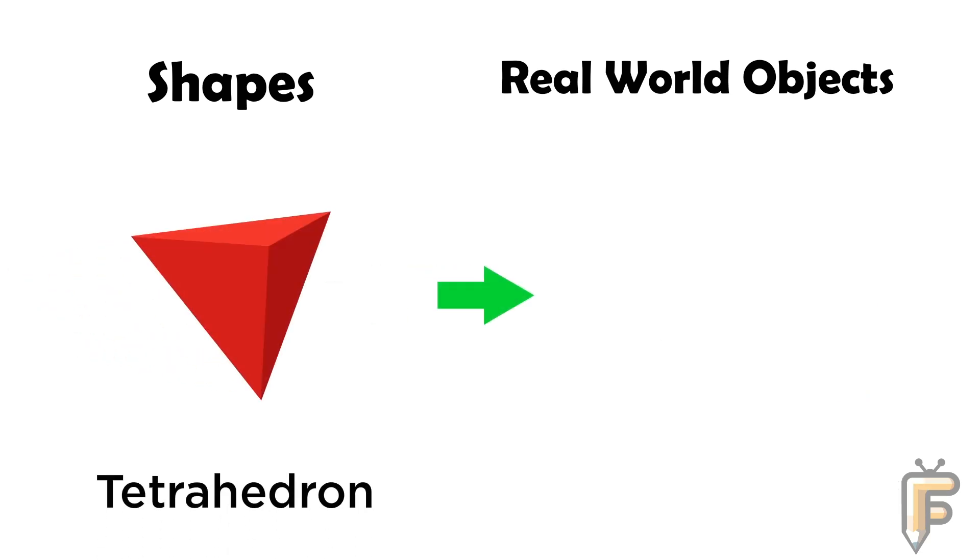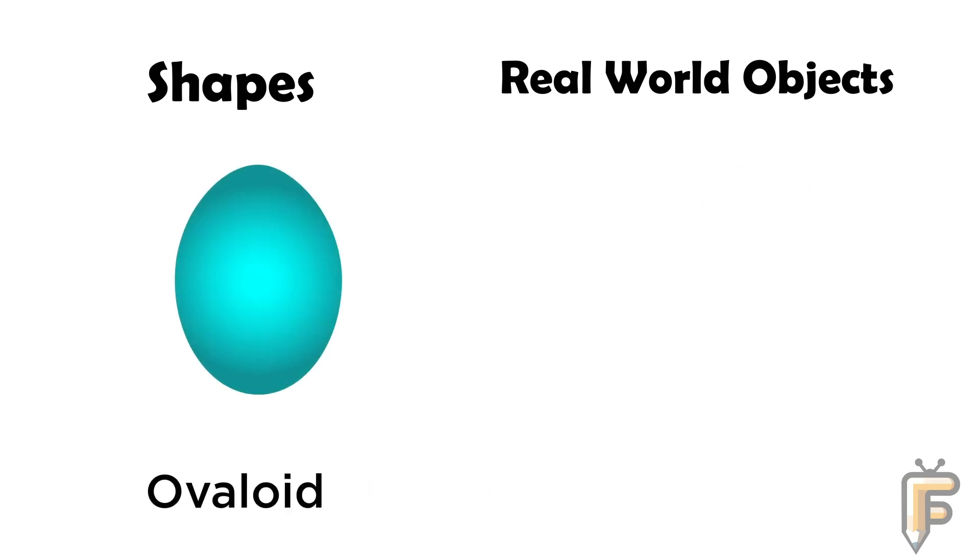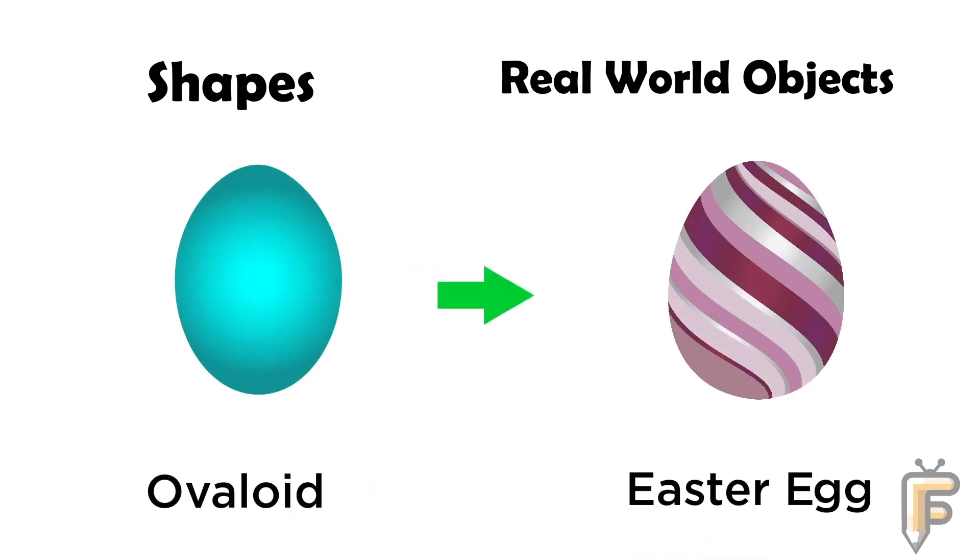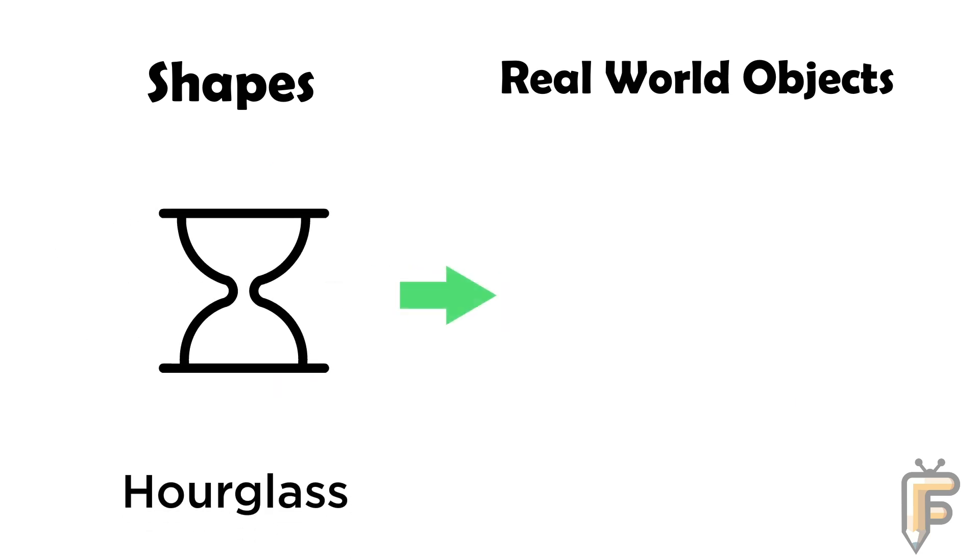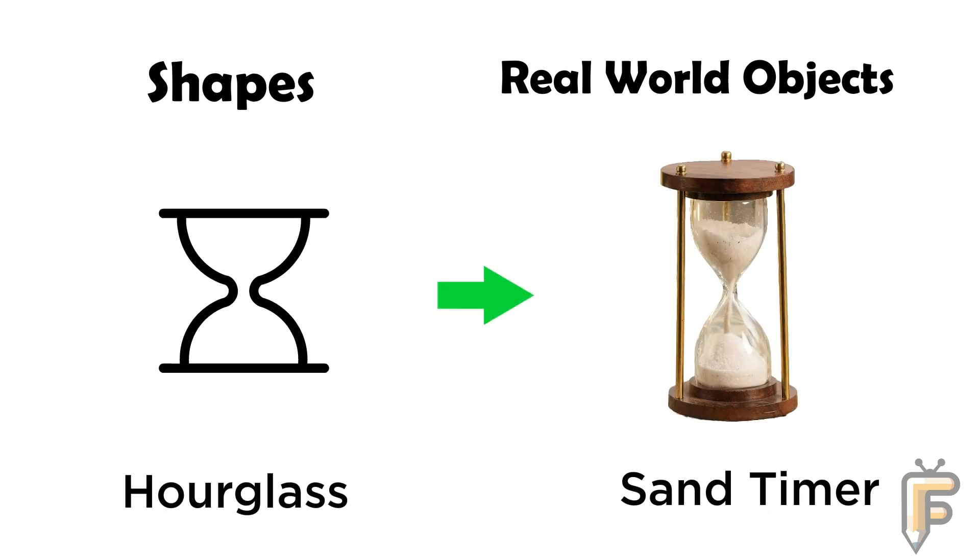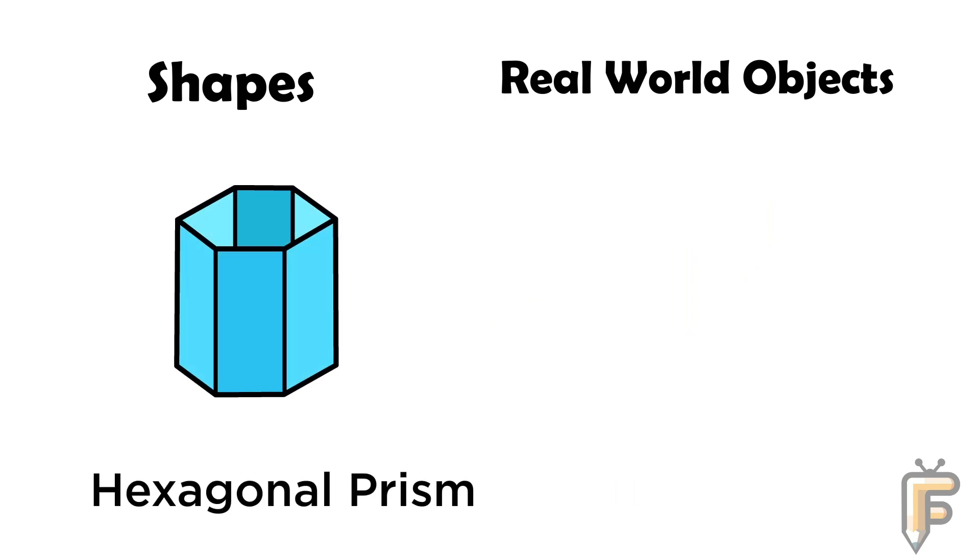Tetrahedron: pyramid teabag is tetrahedron shape. Ovoid: Easter egg is ovoid shape. Hourglass: sand timer is hourglass shape. Hexagonal prism.